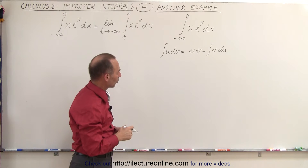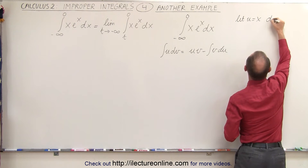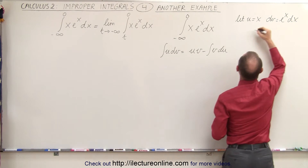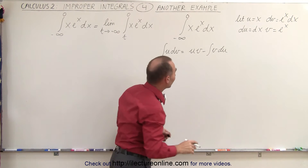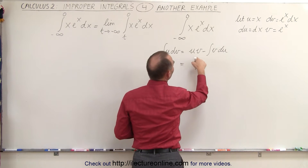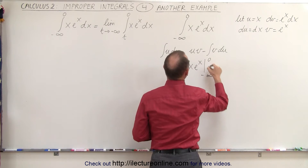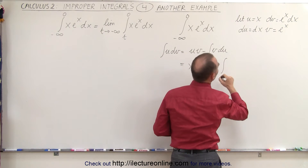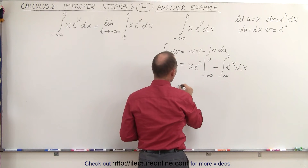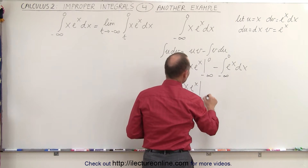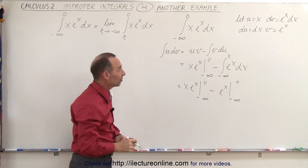We just have to figure out what to call u and what to call dv. Let u equal x, so dv can be written as eˣ dx. Then du becomes dx and v becomes eˣ. Plugging that in: the integral of u dv equals u times v, which is x·eˣ evaluated from minus infinity to 0, minus the integral of v du, which is eˣ dx from minus infinity to 0. This becomes x·eˣ evaluated from minus infinity to 0, minus eˣ evaluated from minus infinity to 0.